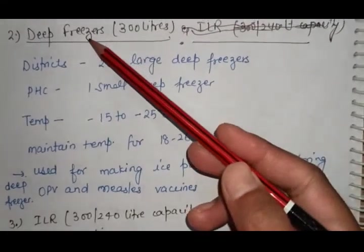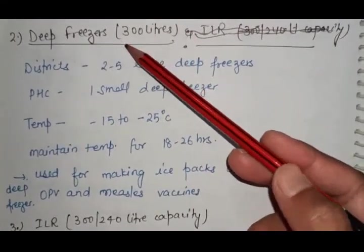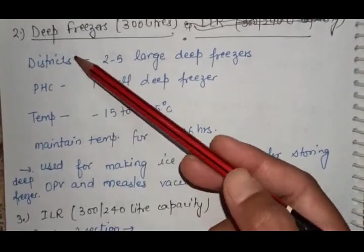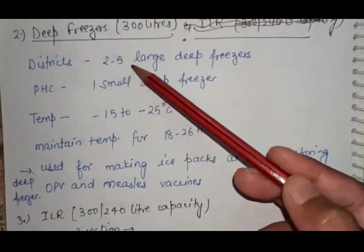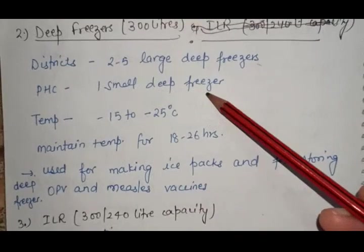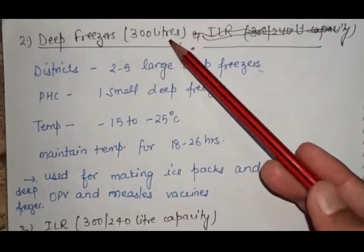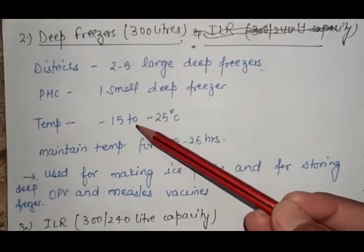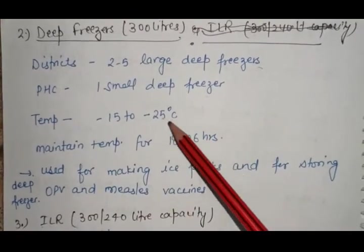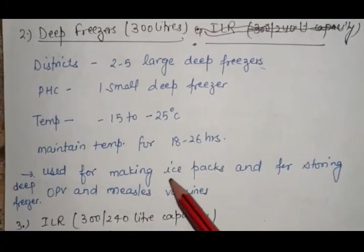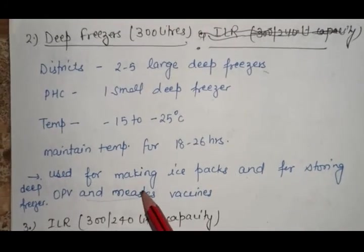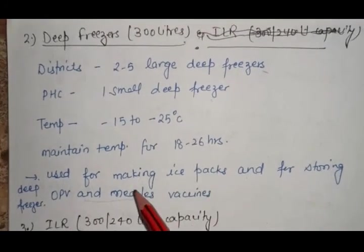Second are deep freezers of capacity 300 liters, used at district and PHC level. At district level 2 to 5 large deep freezers, at PHC 1 small deep freezer. Temperature is minus 15 to minus 25 degrees Celsius, maintained for 18 to 26 hours. Used for making ice packs and storing OPV and measles vaccines.